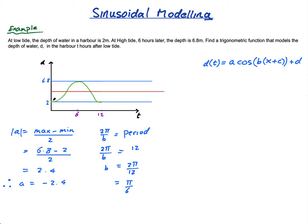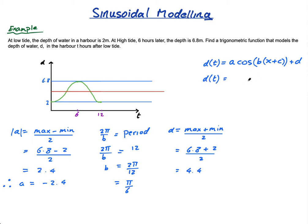c is the horizontal translation — since we're starting right at low tide with no shift, c = 0. Then d = (max + min) / 2 = (6.8 + 2) / 2 = 8.8 / 2 = 4.4. Therefore the function is d(t) = −2.4·cos(π/6 · t) + 4.4.